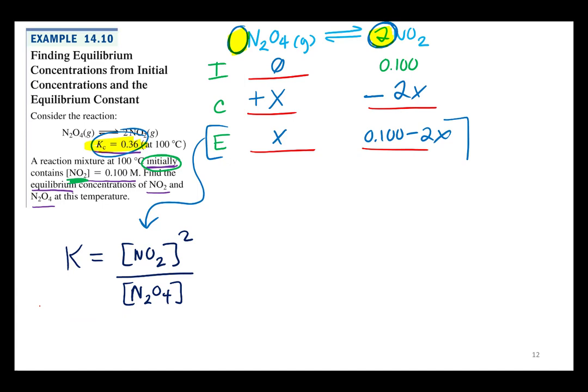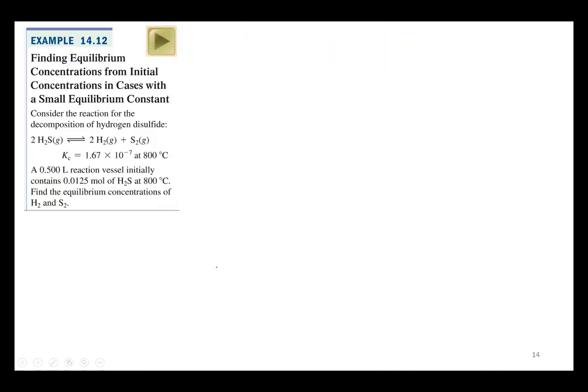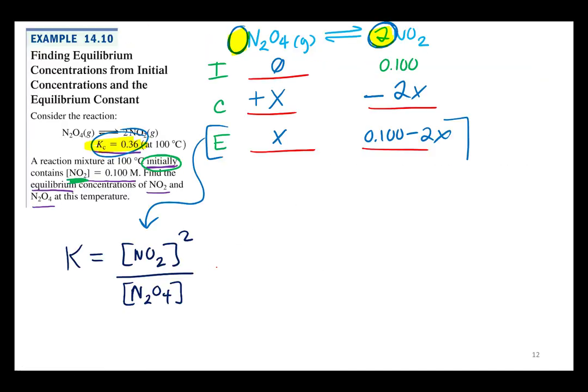I'm just becoming a dynamo on this thing, I'm highlighting, I'm flipping. Edward? Yes, we will. Yeah, we'll plug that in. That's why I highlighted it. We will definitely need it. So let's throw in these values. We've got K equals NO2 is 0.100 minus 2X squared all over X.